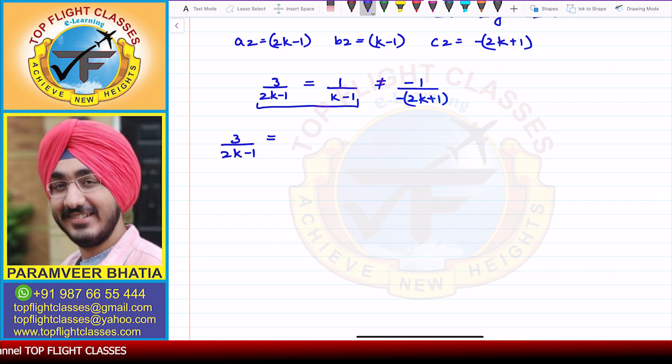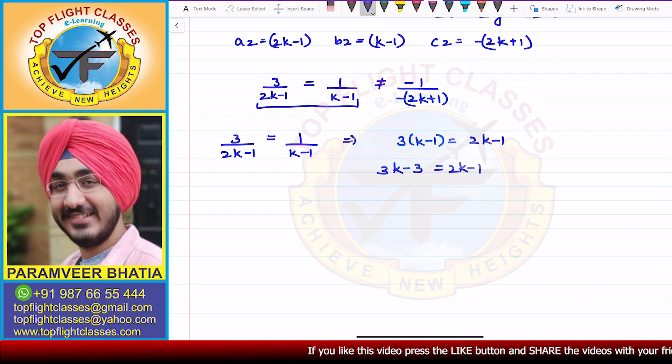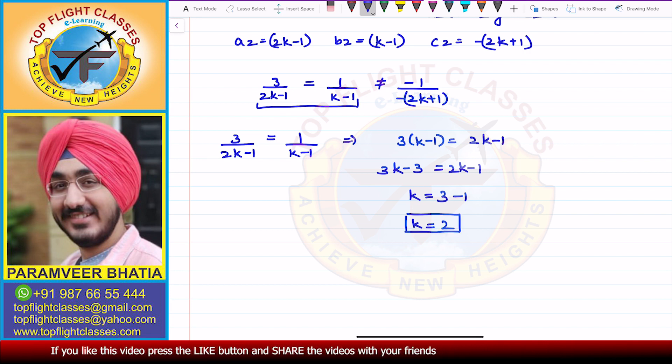On cross multiplication, I get 3 times (k-1) is equal to (2k-1). From here I get 3k minus 3 is equal to 2k minus 1. From here I get k is equal to 3 minus 1. From here I get k is equal to 2. So now that is the value that is required.